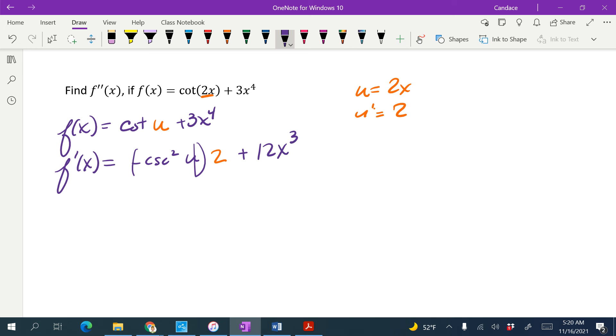Now, I'm going to go ahead and clean this up a little bit before I try to take the second derivative. So this would be negative 2 cosecant squared of u, and really I should probably replace the u with the 2x, and then plus 12x cubed.